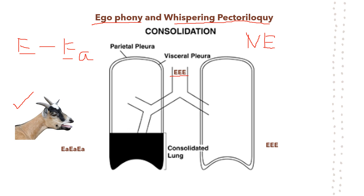Whispering pectoriloquy uses a similar concept. Ask the patient to whisper or produce a hissing sound like a snake; normally this would not be heard through the chest wall, but in consolidation the hissing sound becomes audible on the chest wall surface — that is whispering pectoriloquy. Bronchophony, where you can appreciate the tracheal sound quality at the chest surface, can be noted but is less important to remember. Egophony and whispering pectoriloquy are the key classical signs of consolidation, still valid in modern clinical practice.